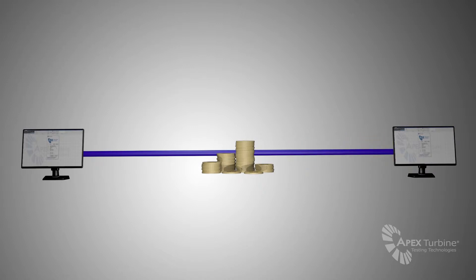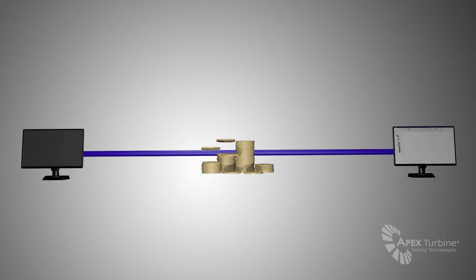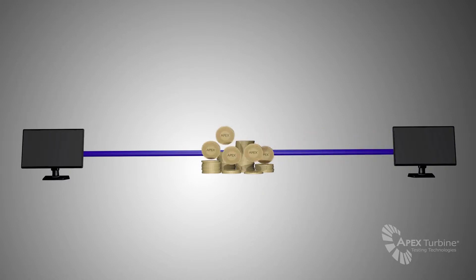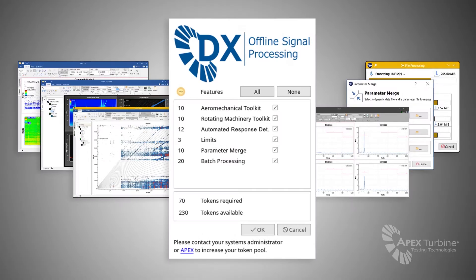The transition to token licensing for APEX analysis products allows customers the flexibility to access all the industry-leading analysis features APEX offers, along with the flexibility to choose the options which best fit the user's current analysis needs. This makes APEX not only the best choice for offline signal processing and analysis, but also the most flexible and cost-effective option as well.